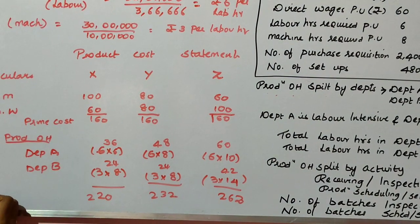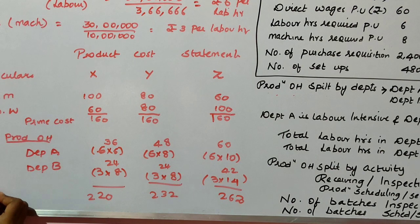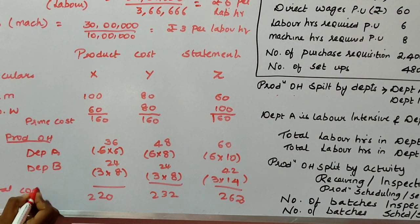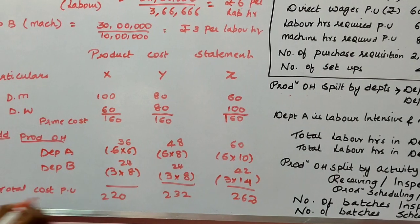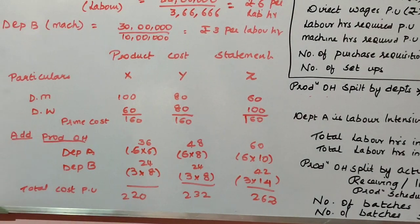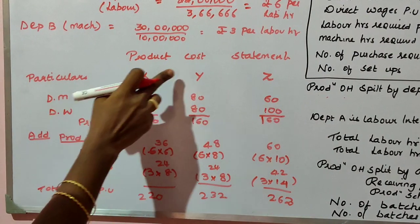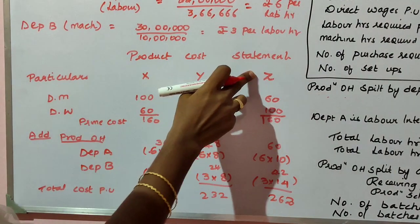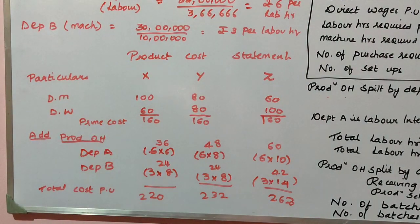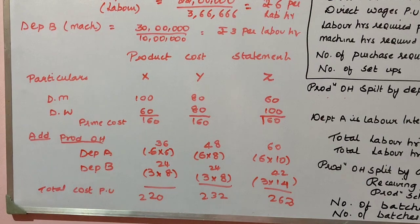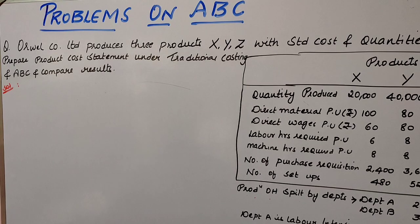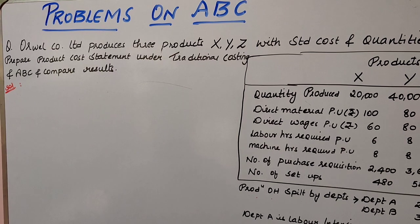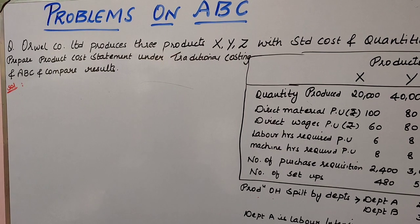Totaling everything, the total cost per unit is ₹220 for product X, ₹232 for product Y, and ₹262 for product Z. This completes the product cost statement using the traditional method.